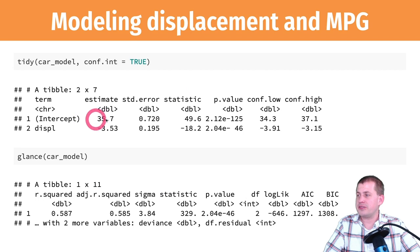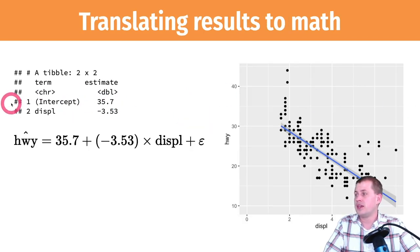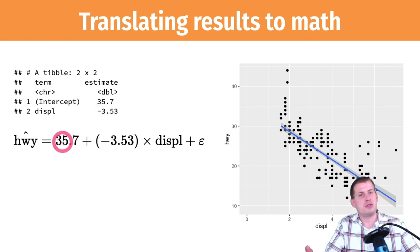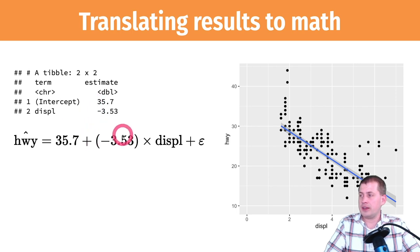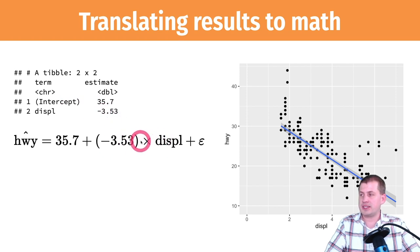Using the information from tidy(), we can translate results to a mathematical formula. Plugging into ŷ = β0 + β1x1, we get: predicted highway = 35.7 + (−3.5) × displacement. That is our formula for predicting highway miles per gallon. The nice thing about this is if there's a car with a displacement of 4, we can plug in that number: −3.5 × 4 ≈ −14, and 35.7 − 14 ≈ 21-22 mpg.